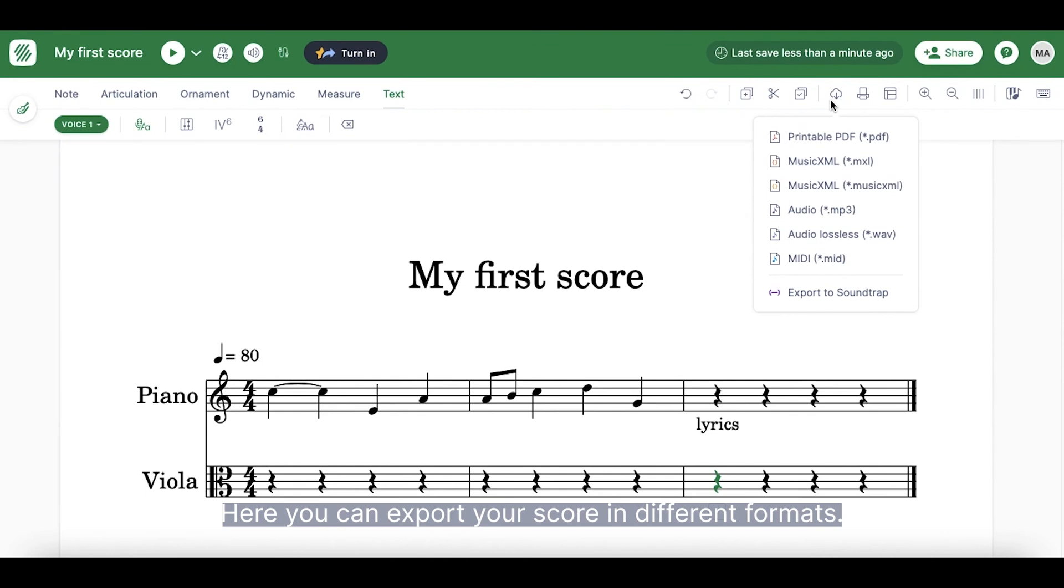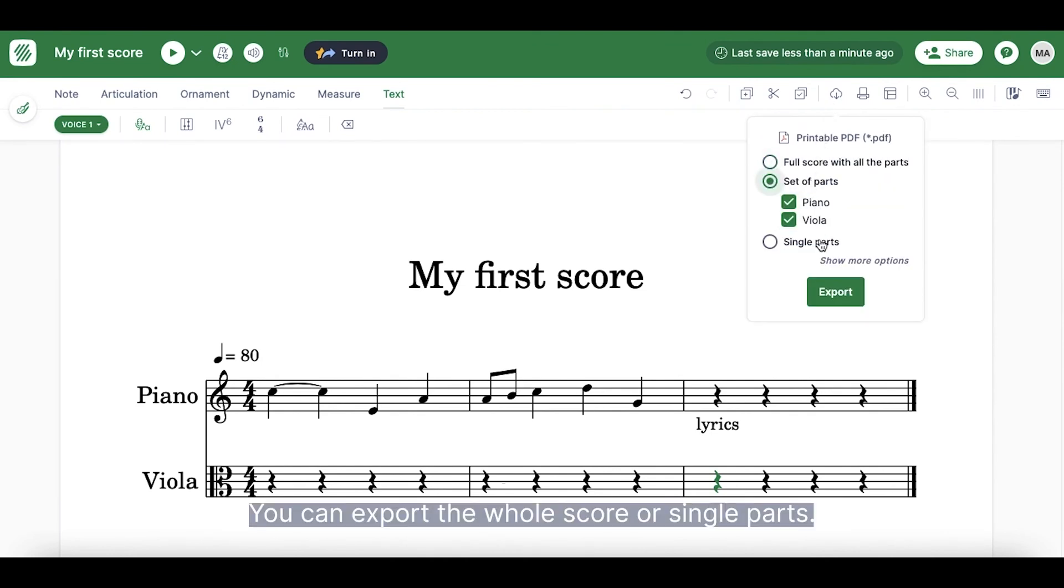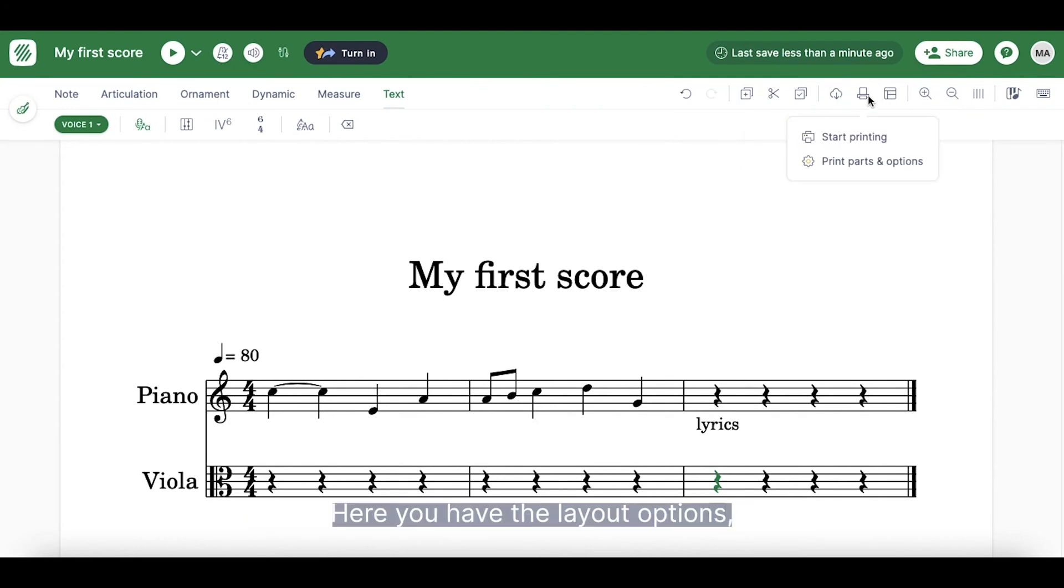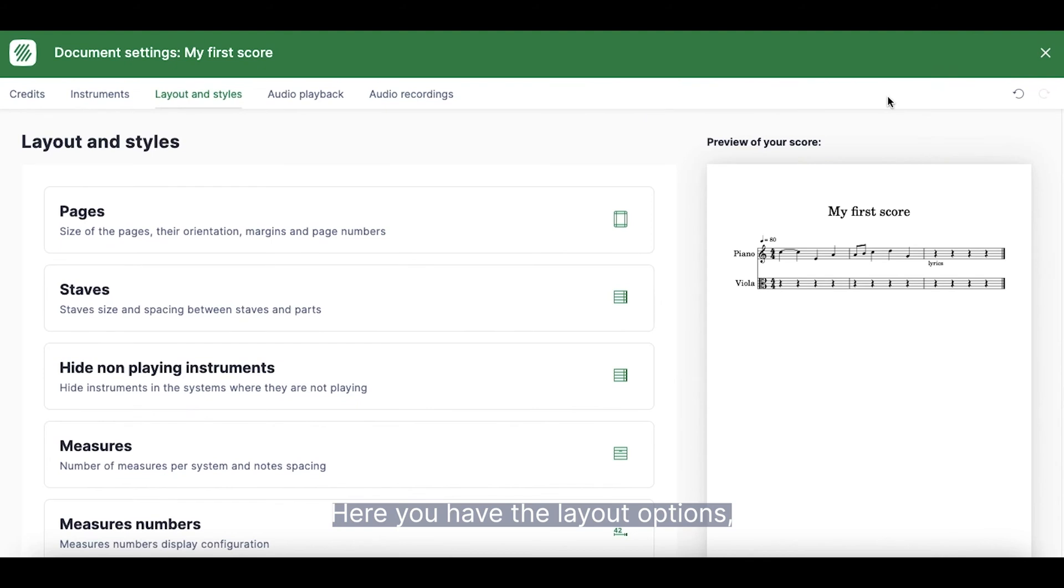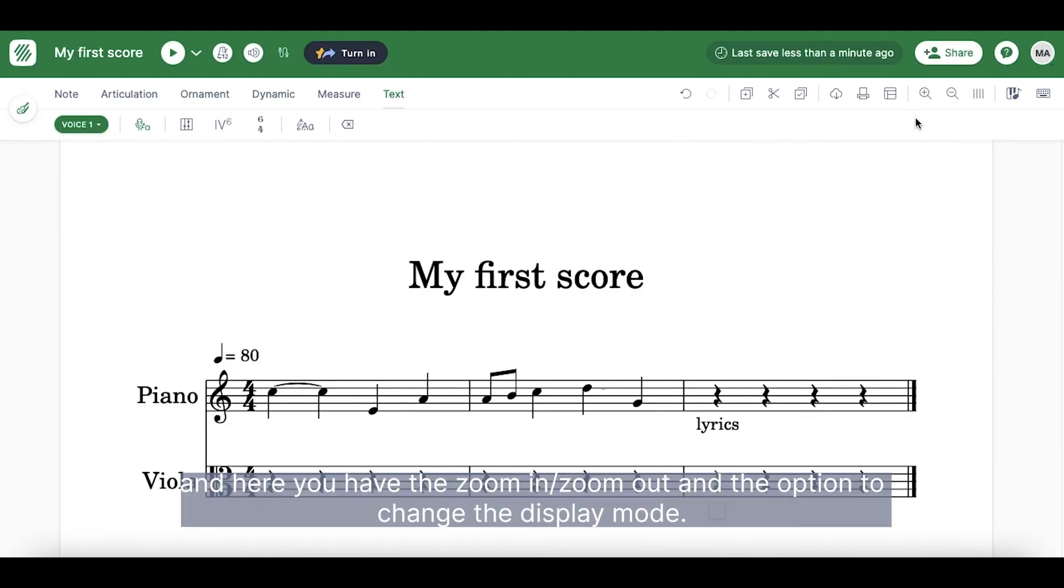Here, you can export your score in different formats. You can export the whole score or single parts. Here, you have the layout options. And here, you have the zoom in, zoom out and the option to change the display mode.